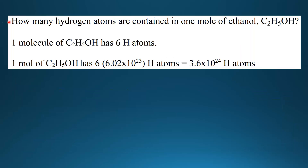Let's look at the next example. How many hydrogen atoms are contained in one mole of ethanol, which is C2H5OH? One molecule of ethanol has six hydrogen atoms, but the question is asking for one mole. So one mole of ethanol has six times Avogadro's constant of hydrogen atoms, and that equals 3.61 times 10 to the 24 hydrogen atoms.